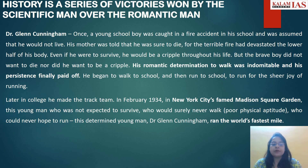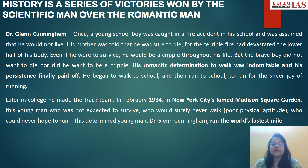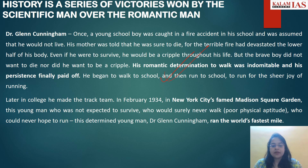For example, Dr. Glenn Cunningham — during his childhood he was caught in a fire accident and was not expected to survive and would surely never walk because of his poor physical aptitude. But one day he ran the world's fastest mile. This was possible because of his romantic determination to walk, his persistence, and his consistency. This example justifies that romanticism can also win over the scientific temper sometimes.